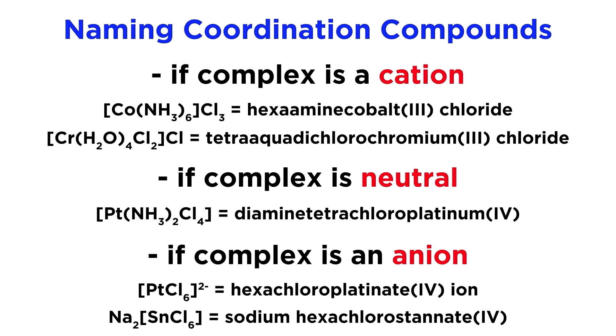When the complex is an anion, however, we will have to add the suffix '-ate' to the metal, giving us things like platinate instead of platinum, and so forth. With stannate, we will see that sometimes the Latin name is used for the metal atom instead of the name of the element itself.